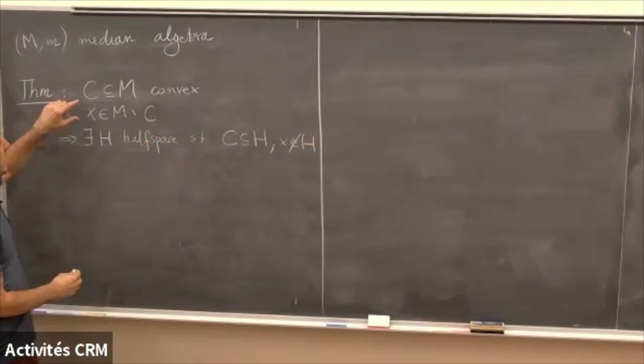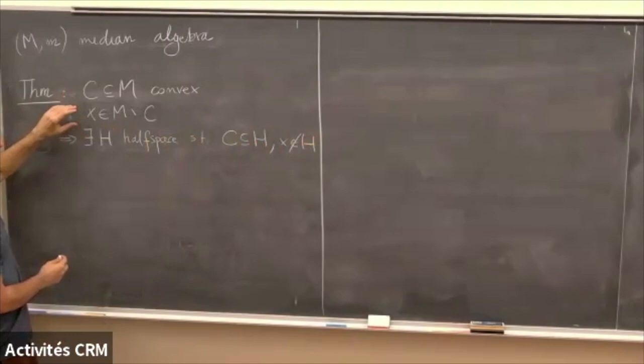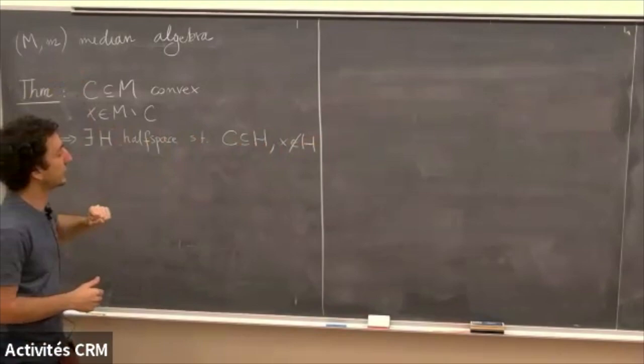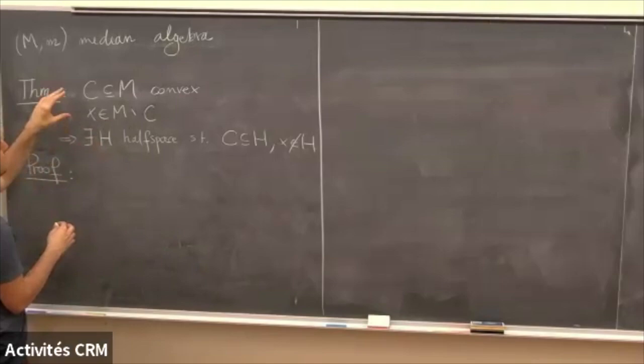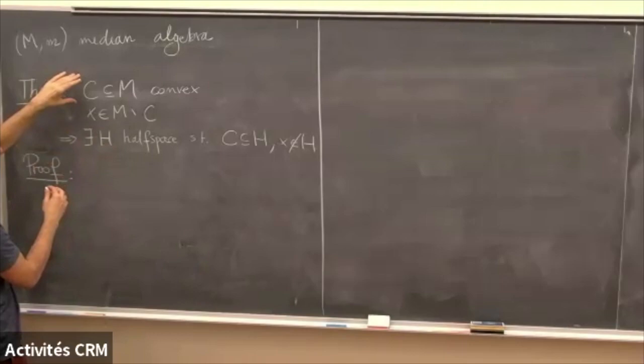In particular, if C is a single point, this tells you that half spaces separate points. I'm proving this because it's exactly as hard as proving that, and something slightly harder but also true: two disjoint convex sets can also be separated by half spaces. For the proof we use the axiom of choice. Take a maximal convex set containing C but not x.